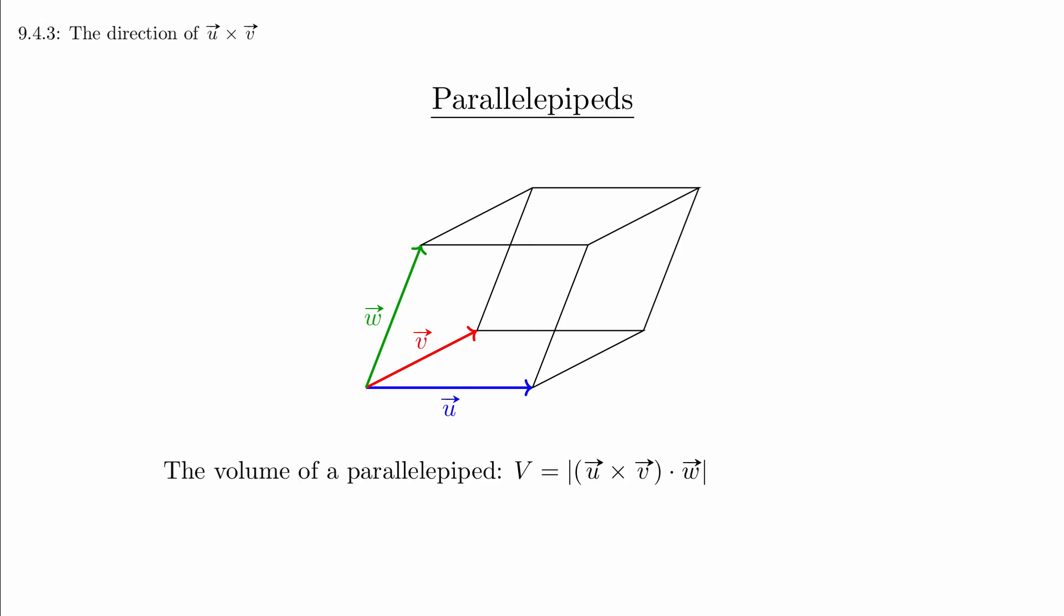We can calculate the volume of the parallelepiped by using the cross product and the dot product together. The volume of the parallelepiped formed by the vectors u, v, and w is the absolute value of u cross v dot w. We won't go into the details, but the idea is that the u cross v part gives us the area of the parallelogram that makes the base, and then the dot product of the unit normal vector with w gives us the height.